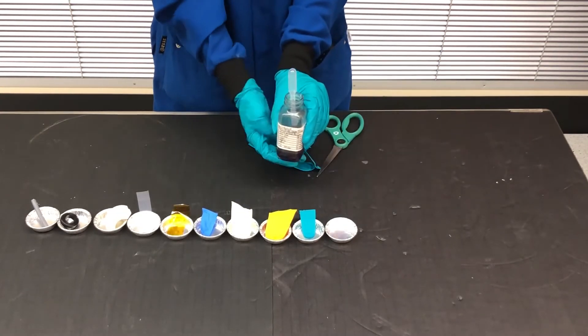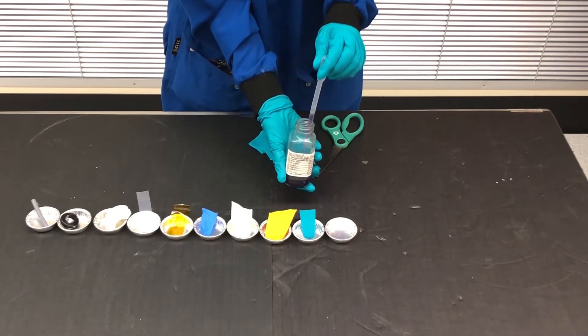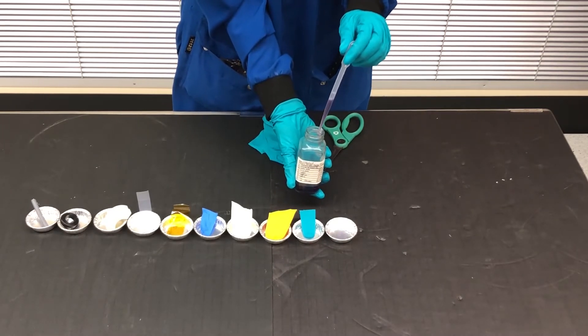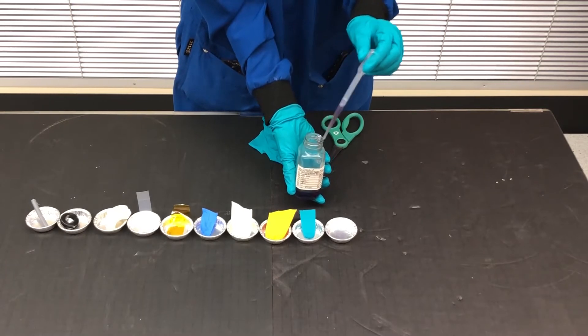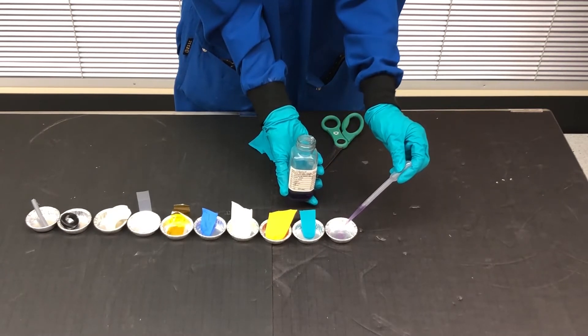For liquid samples, such as oils or lubrication, pipette or pour a small drop into the bottom of the tin for testing. Repeat this procedure for all the other potential sources of contamination.